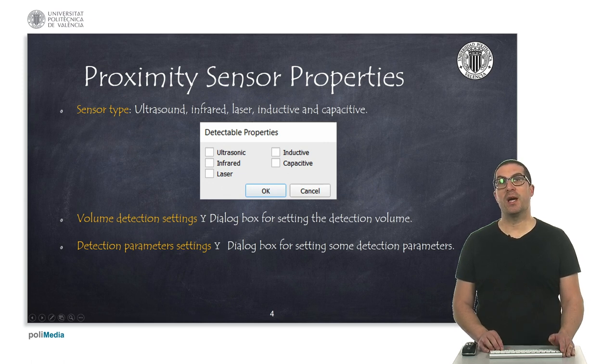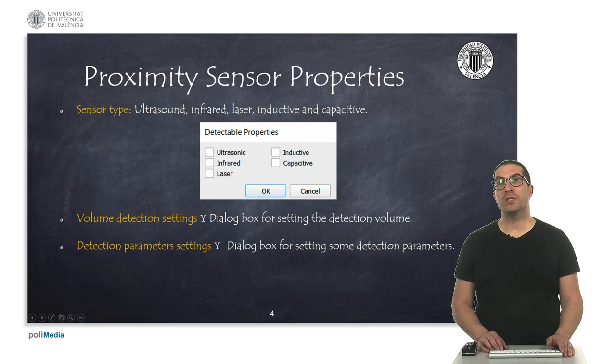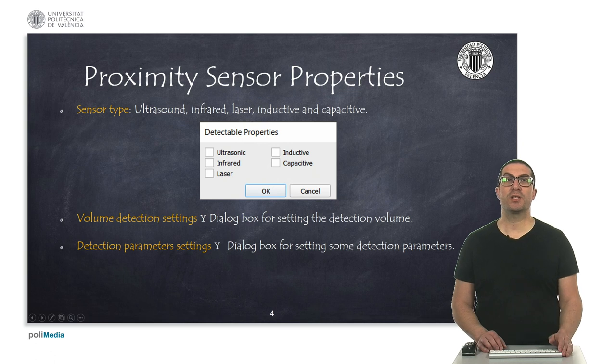For instance, another case is crystal objects should not reflect light from a laser sensor, but can be detected with an ultrasound sensor. This can be set in each object in the detectable properties dialog box. In addition to this, on each sensor we can set properties to define the sensor type, to adjust the detection volume, and also some detection parameters.